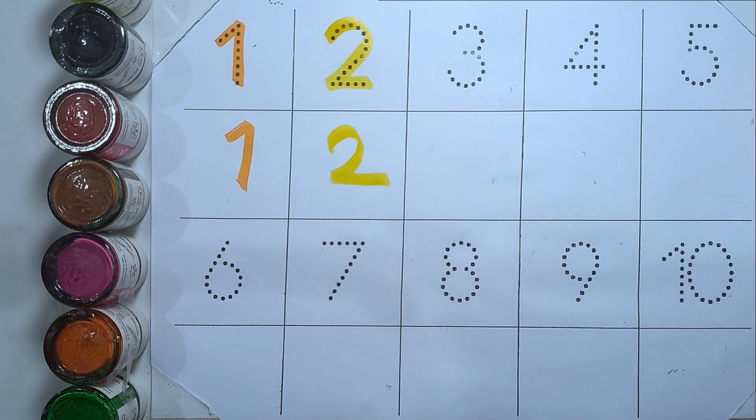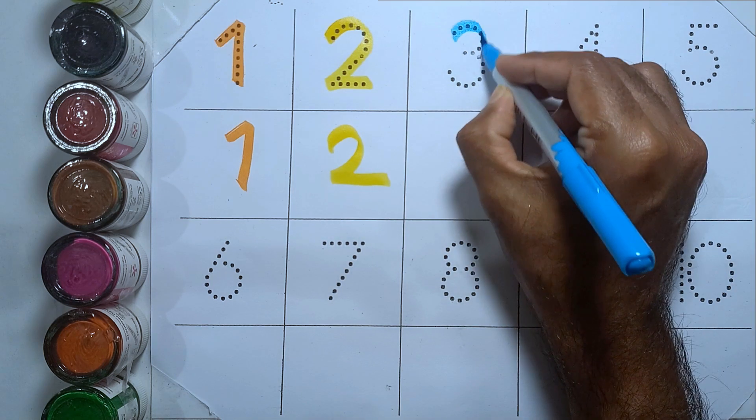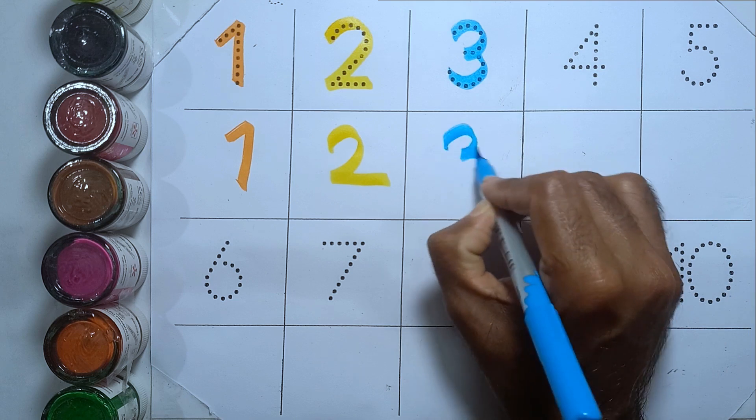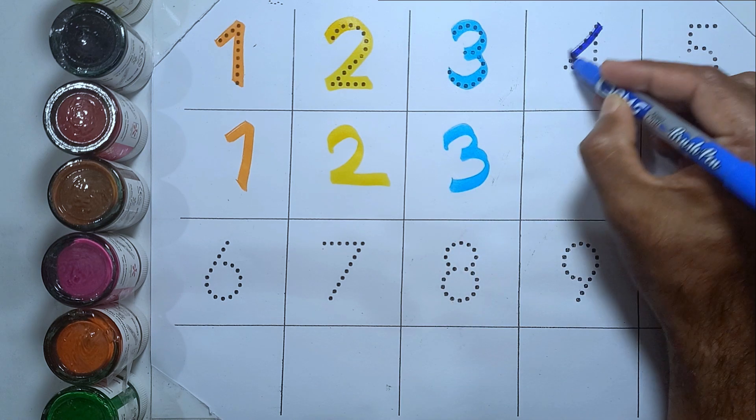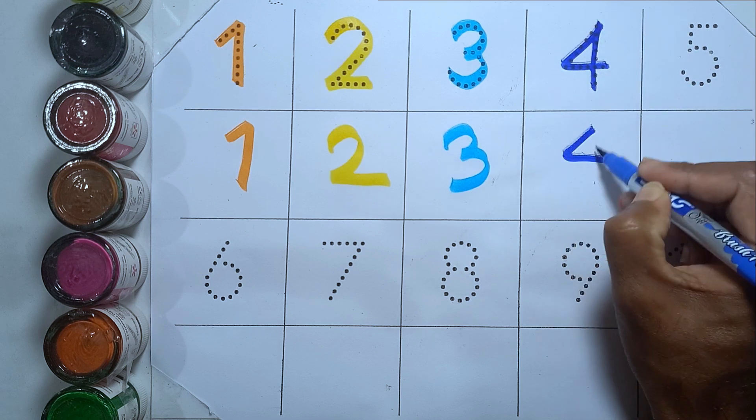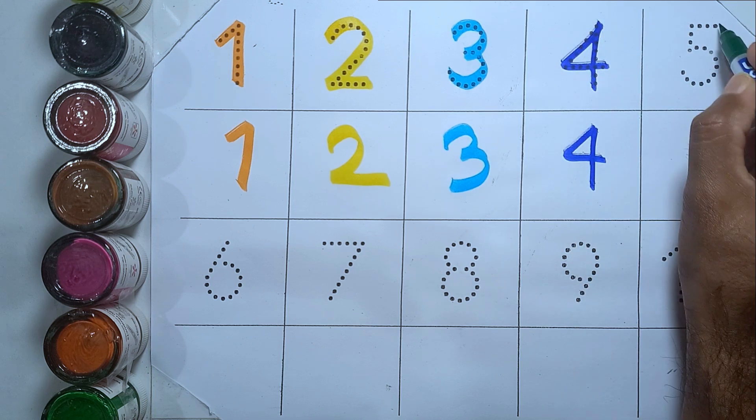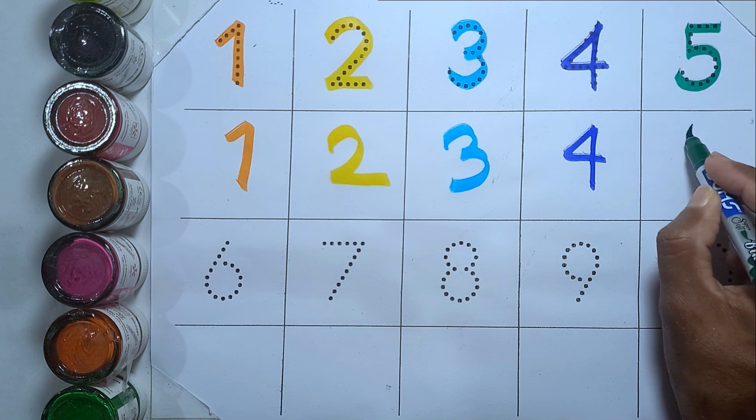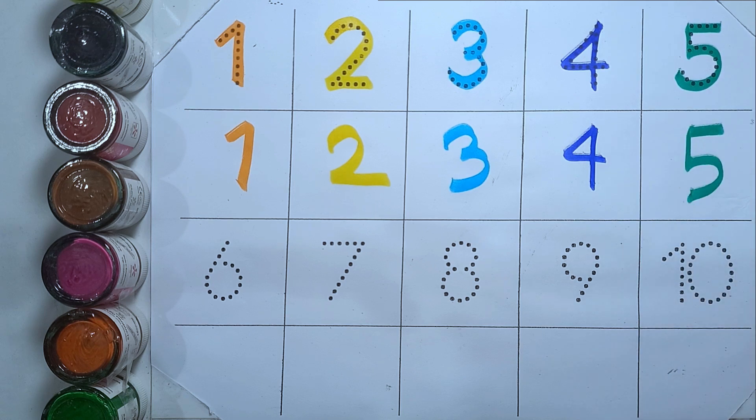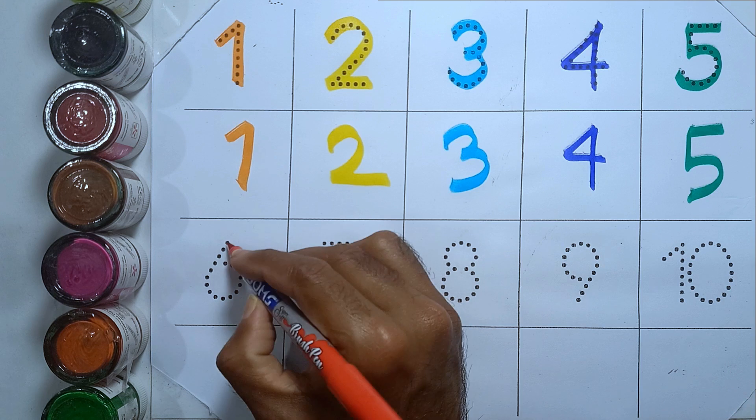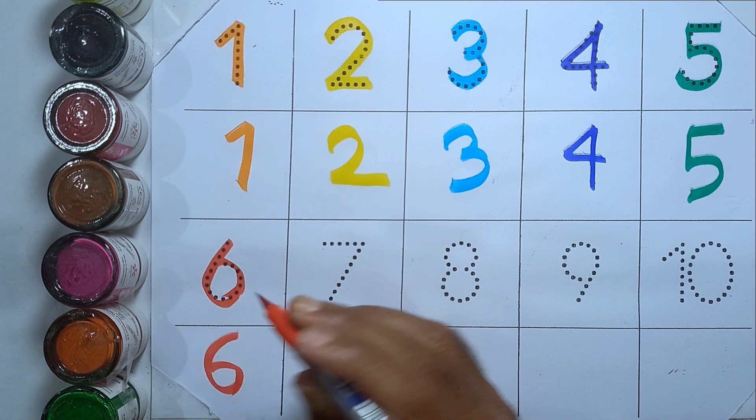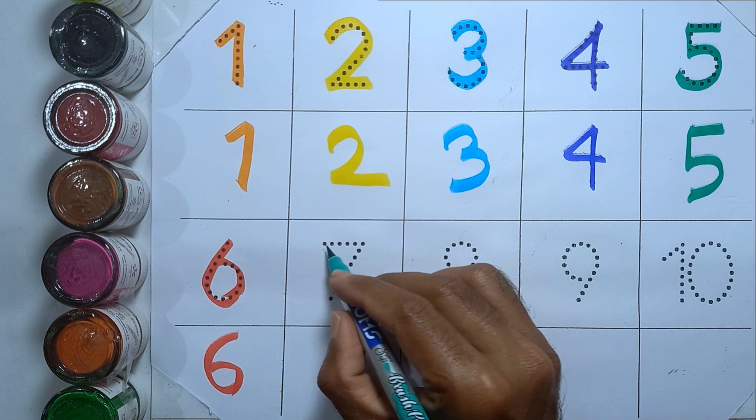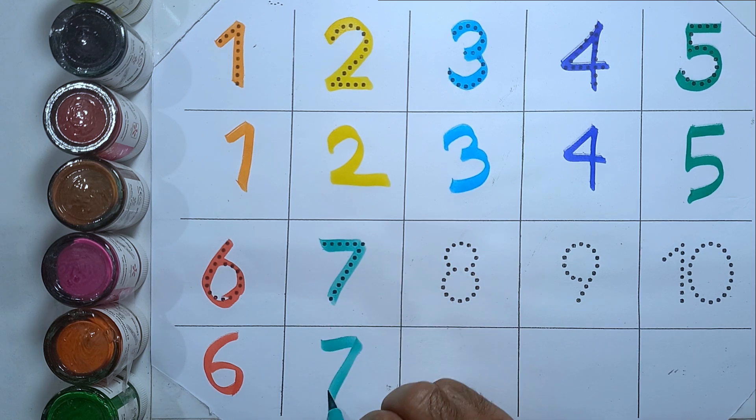Two, three, three, three, four, four, four, five, five, five, six, six, six, seven.